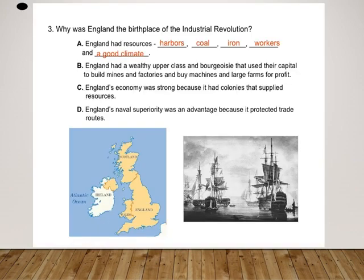In summary, England was the birthplace of the Industrial Revolution because it had resources like harbors, coal, iron, workers, and a good climate. England had a wealthy upper class and bourgeoisie that used capital to build mines, factories, buy machines, and large farms for profit. England's economy was strong because it had colonies that supplied resources, and England's naval superiority protected its trade routes.